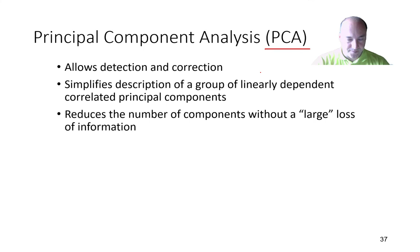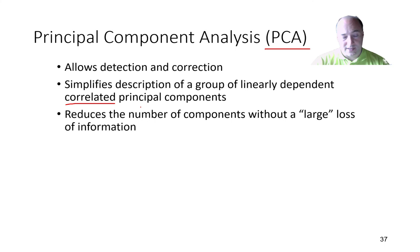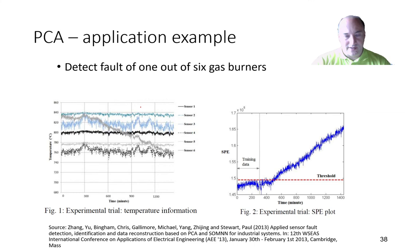PCA is a quite useful method because it allows us to reduce the amount of information in our description without a large loss of information. It is not only used in sensors — you can find it in statistics and in image compression, for example. The way it works is that we try to describe our data with components that are linearly dependent on each other, meaning they are correlated. We will use matrices and vectors in this description.